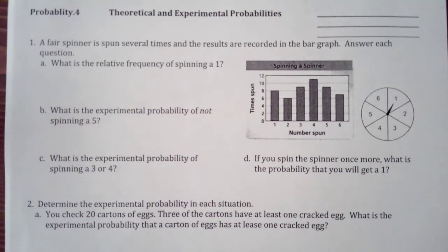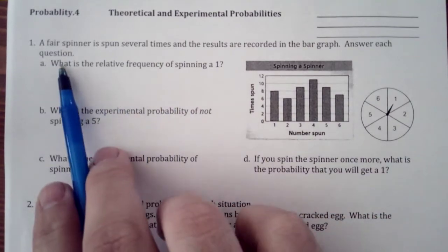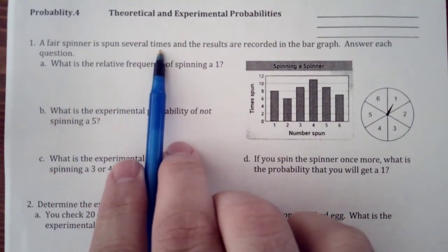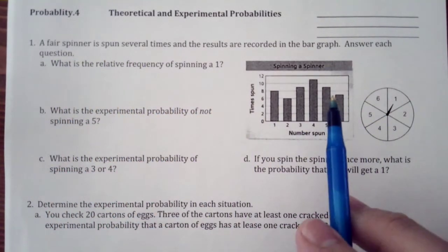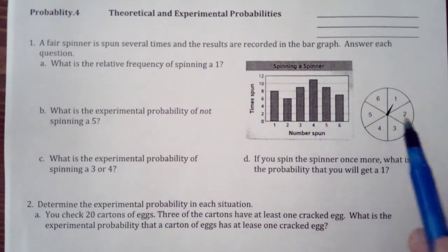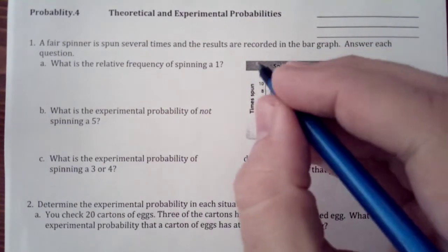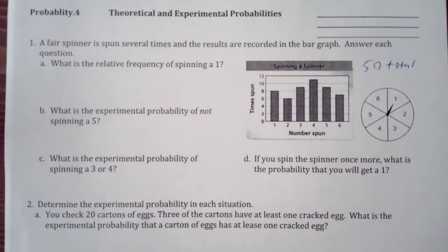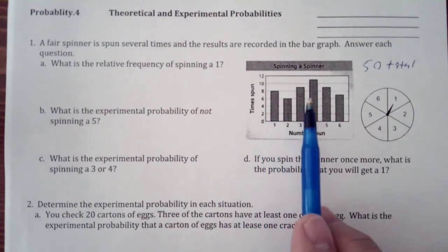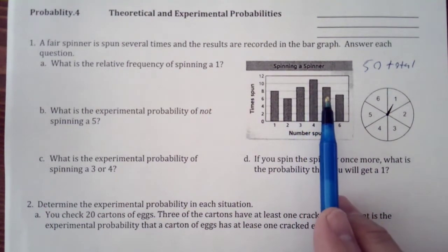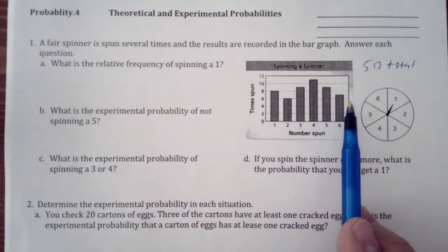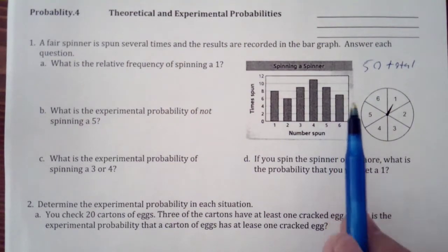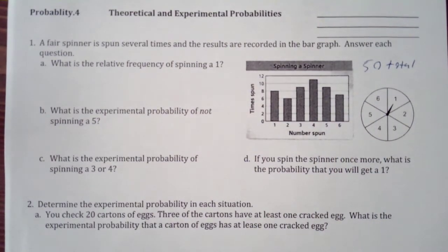So what I would like to do - it's spun several times, it doesn't tell us how many times it's taught, so we're going to add all these up together. I did that beforehand and we have 50 total spins. So if you go 8 plus 6 plus 9 plus 11 plus 9 plus 7, you're going to get 50.